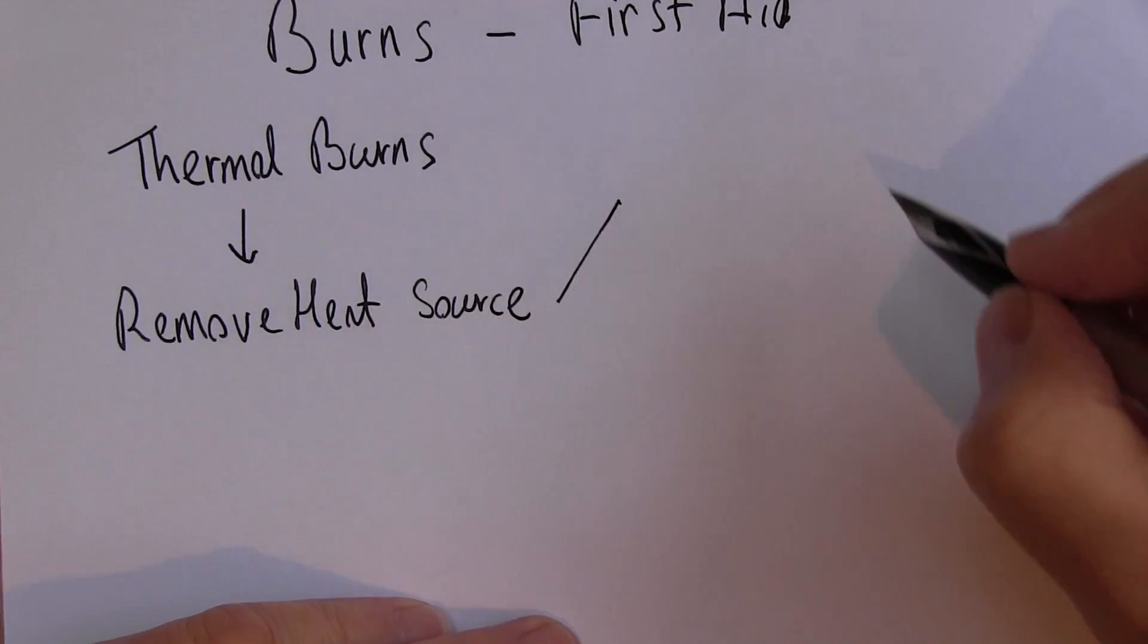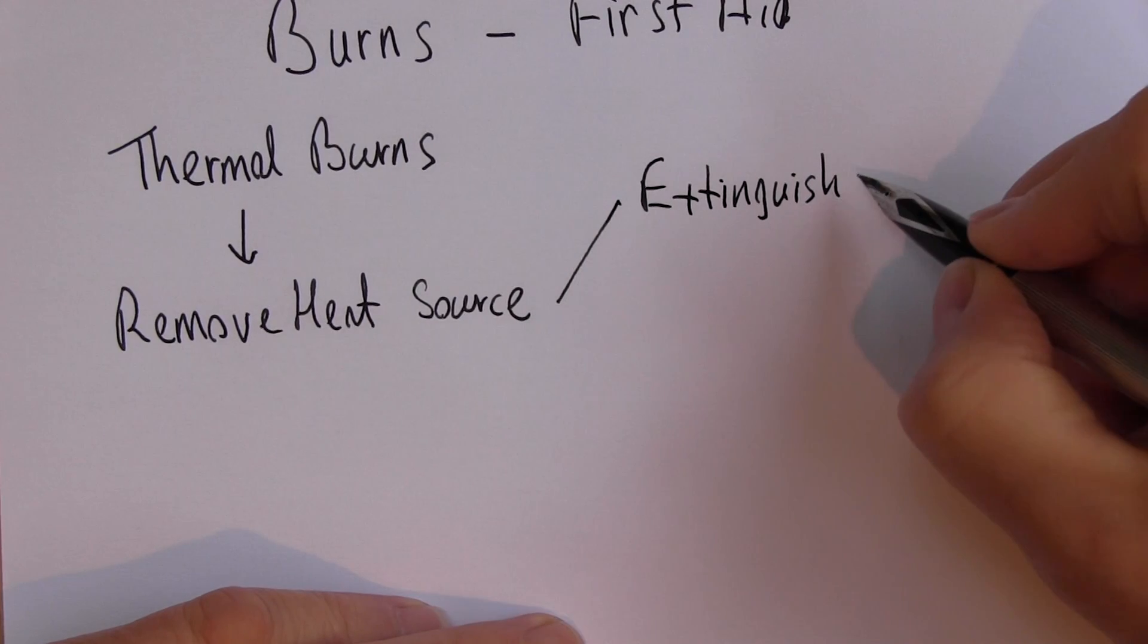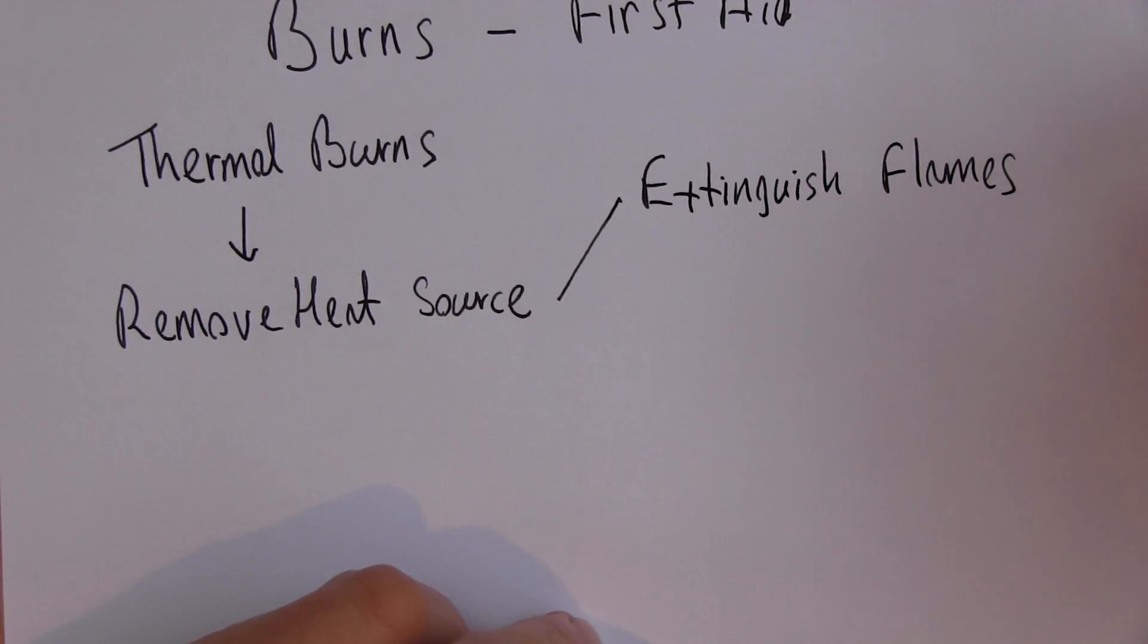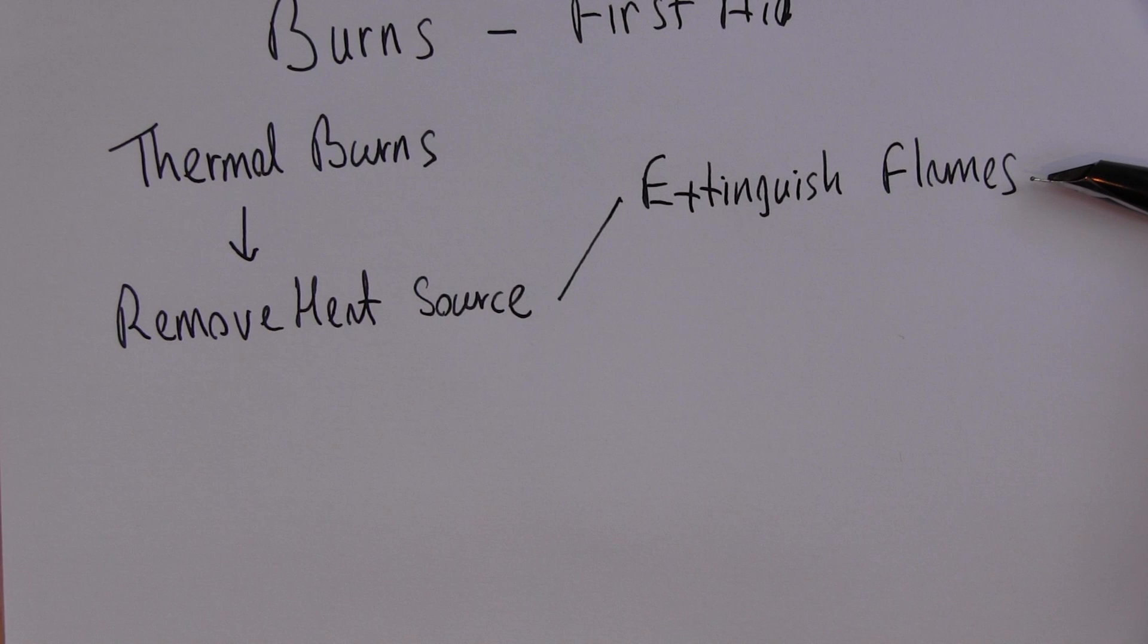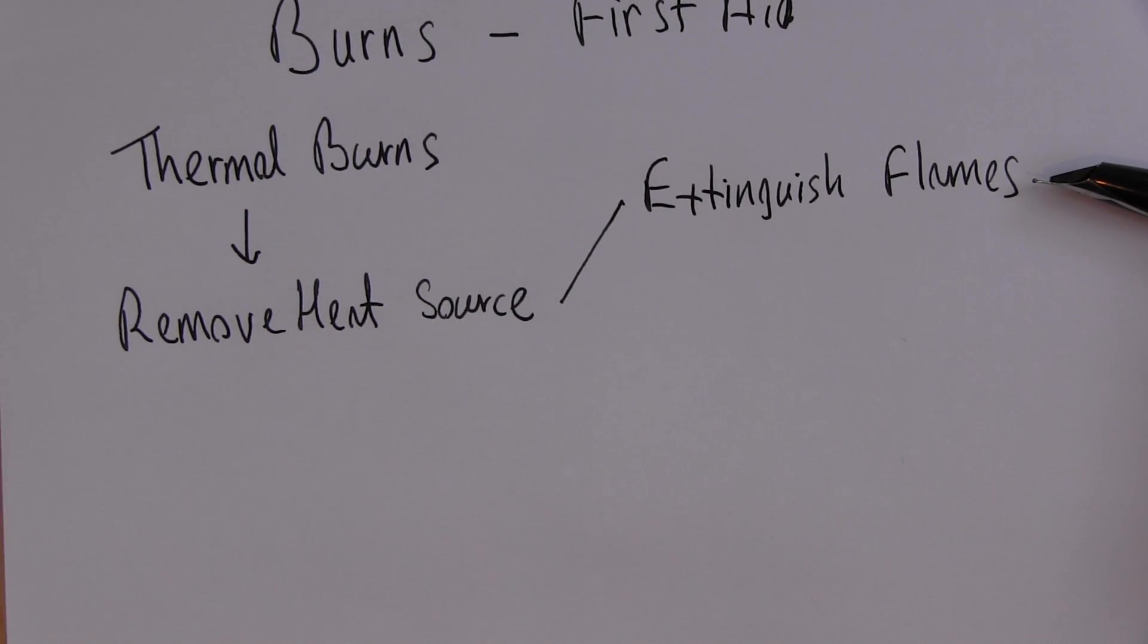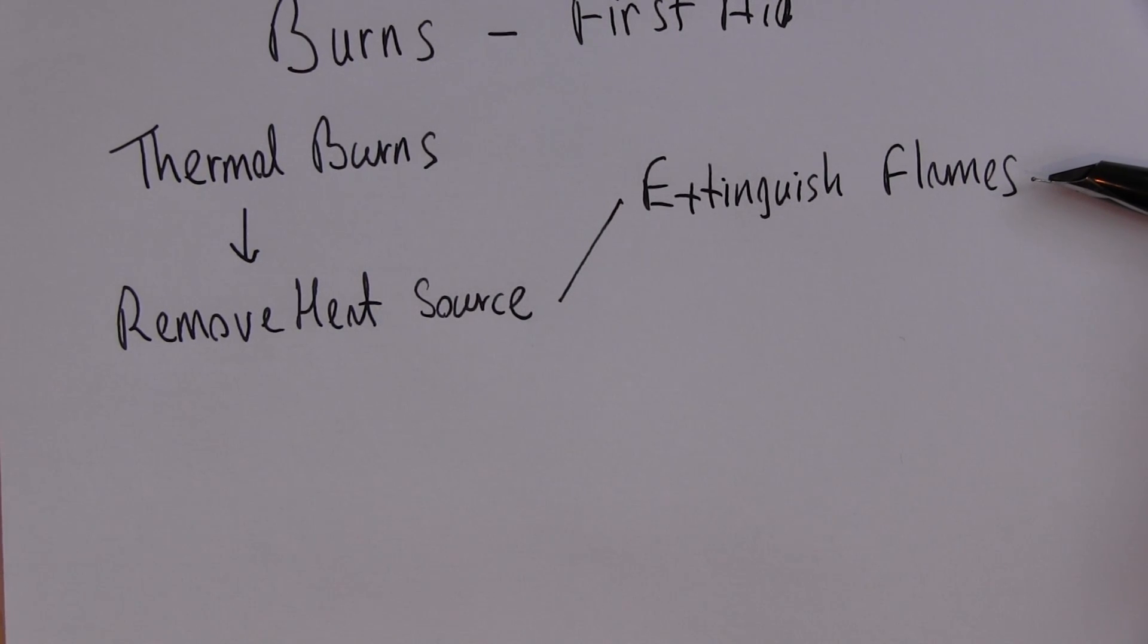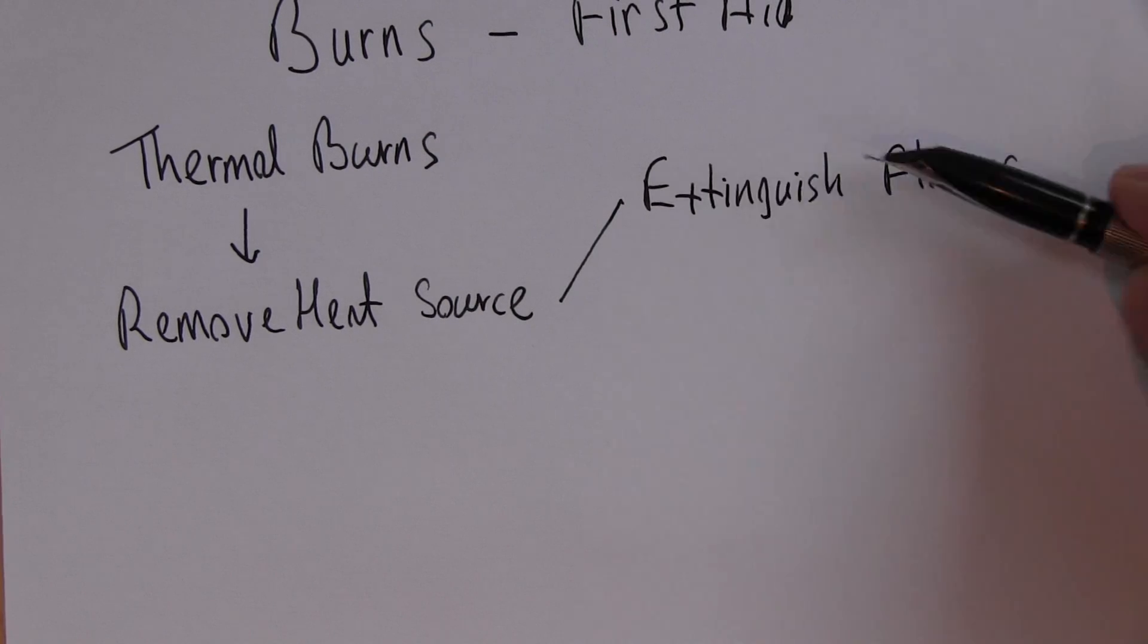So this could include things like extinguishing any flames, for example if someone's clothes were on fire. And we would normally do this by smothering it with ideally a fireproof cloth or any damp cloth, because fire needs oxygen to burn. A classical example is a chip pan fire where putting water on burning fat would splash causing facial burns. Although this does sound ridiculous, we do sometimes see it in A&E. The correct thing to do is to smother it with a damp cloth.